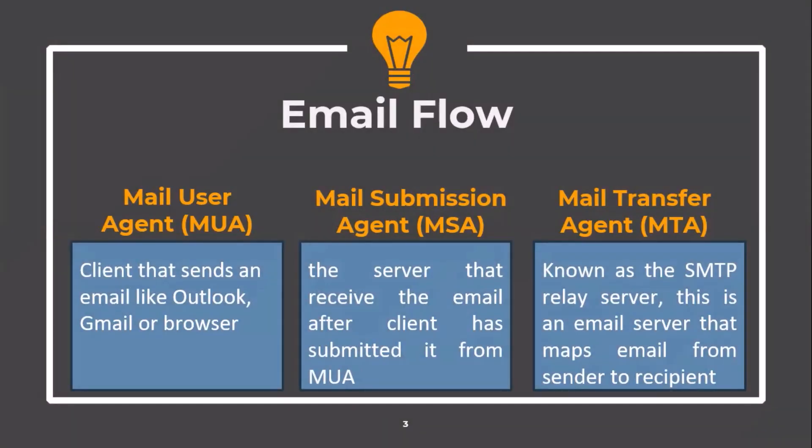First, let us understand the actual flow of an email. There are multiple entities involved during an email exchange. An email originates from a mail user agent, which is a client that sends an email like Outlook, Gmail, or a browser. Then there is the mail submission agent, which is the server that receives the email after the client has submitted it from a mail user agent.